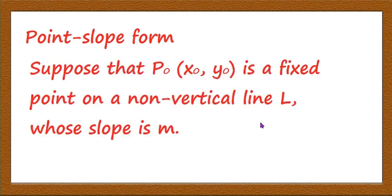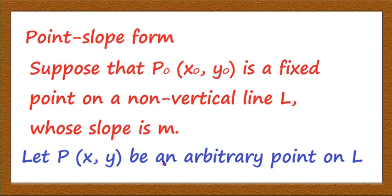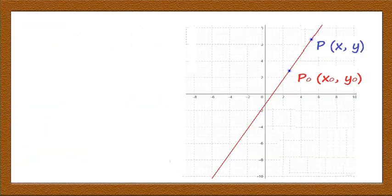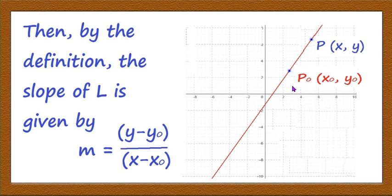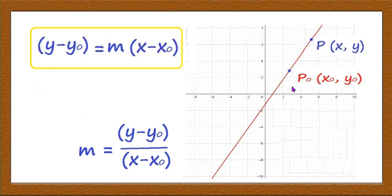Suppose that P0(x0, y0) is a fixed point on a non-vertical line L whose slope is m. In the point-slope form, a point and the slope of the line are given. Let P be an arbitrary point on the line. Then by definition, the slope of L is given by m = (y - y0) / (x - x0), and that gives y - y0 = m(x - x0), which is the equation of the line with slope m passing through the point (x0, y0).